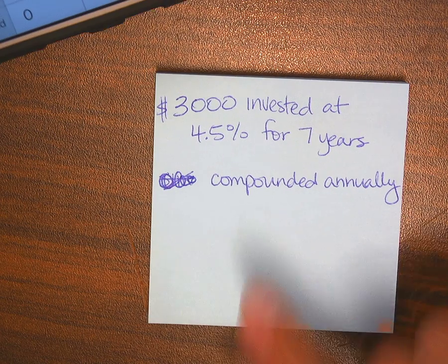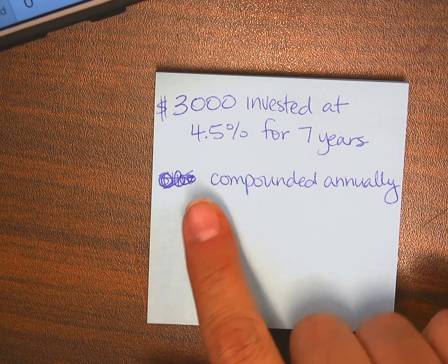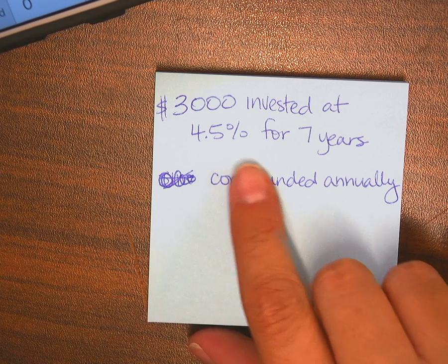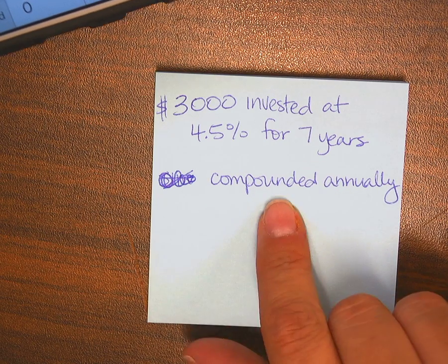So if I'm looking at this interest problem and it says I'm going to invest $3,000 at 4.5% interest rate for 7 years and it's compounded annually.